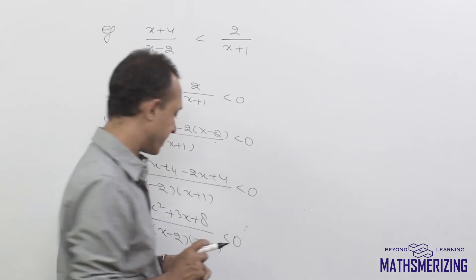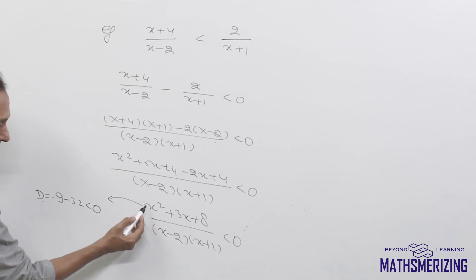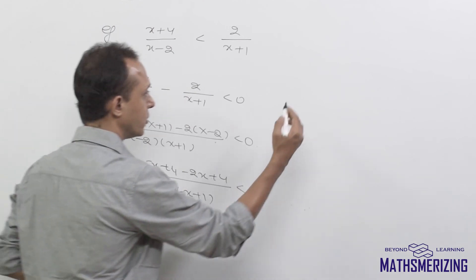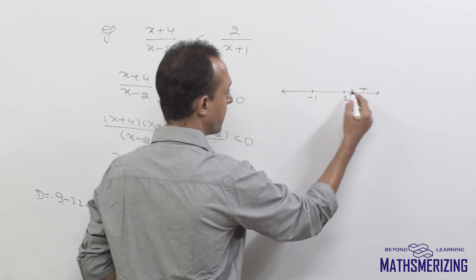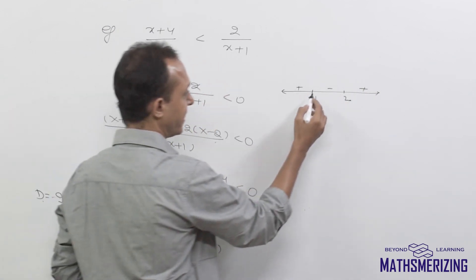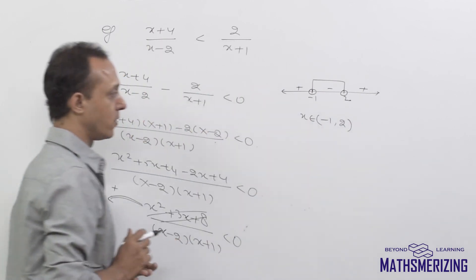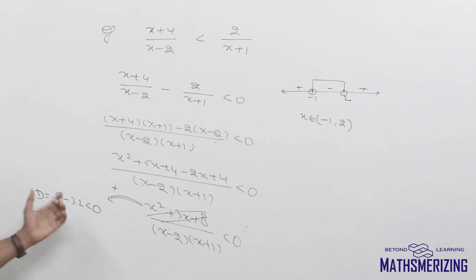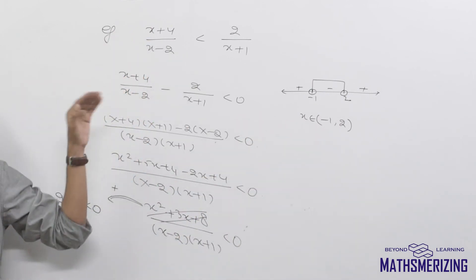Now we try to factorize x² + 3x + 8. The discriminant is 9 minus 32, which is less than 0, and the coefficient of x² is positive, so this expression is always positive. We remove it from the inequality. The remaining roots are x = -1 and x = 2. The rightmost sign is plus, giving plus, minus, plus. We need less than 0, which is minus, so the answer is x belongs to (-1, 2). This is how we solve any rational inequality.